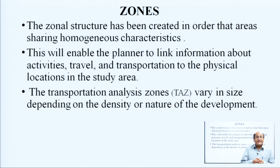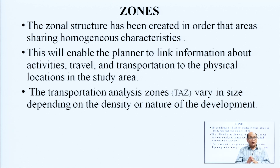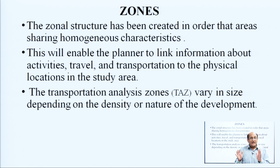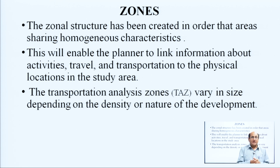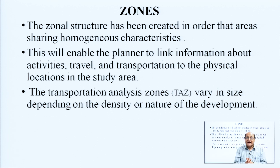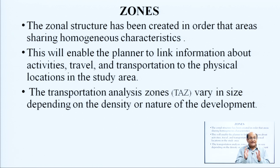The zonal structure has been created so that areas share homogeneous characteristics. For example, Hazratganj is one zone and Gomti Nagar is another zone. Hazratganj has mainly commercial areas whereas Gomti Nagar is a residential area. So these two are not homogeneous with each other — each has its own homogeneous characteristic.